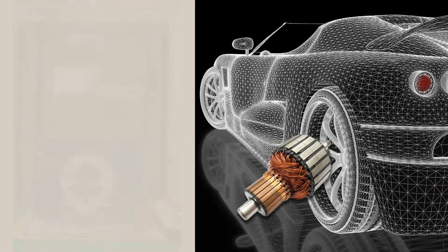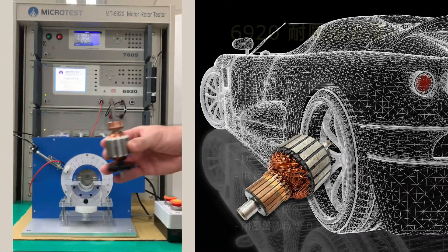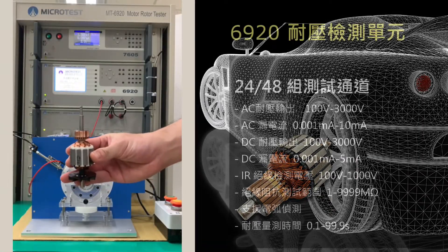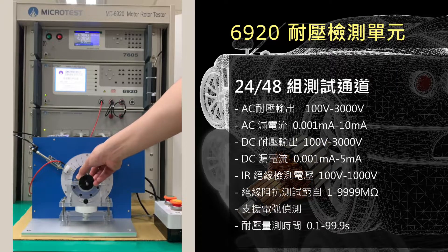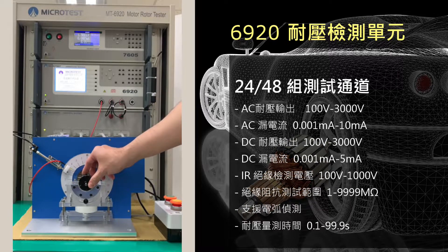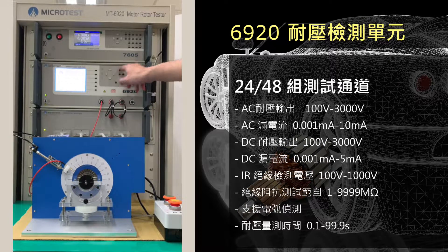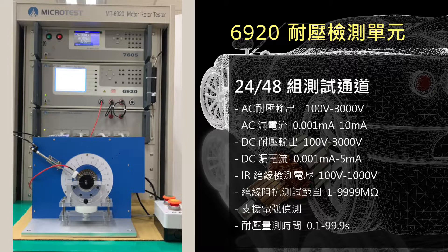For Hypot Test by Microtest 6920, inspect leakage current and Hypot by connecting one end to the coil winding.